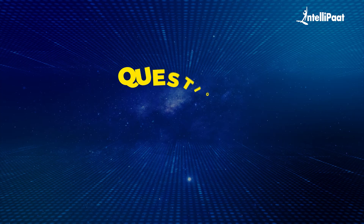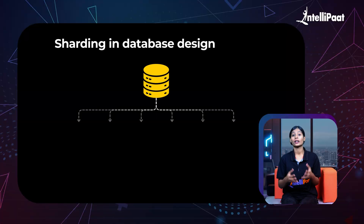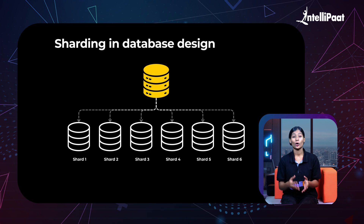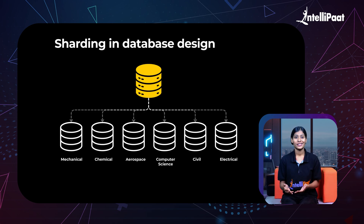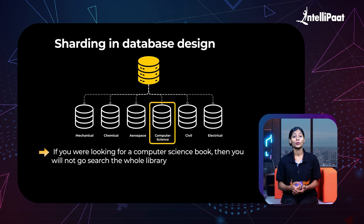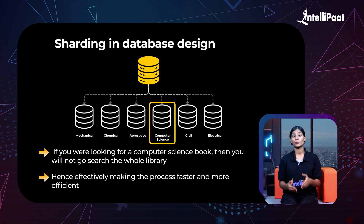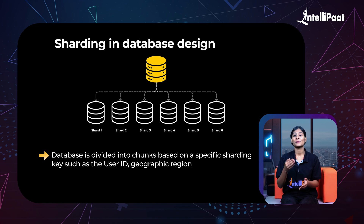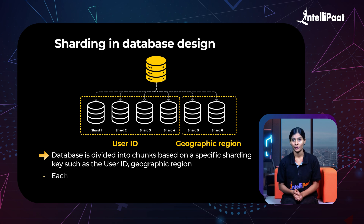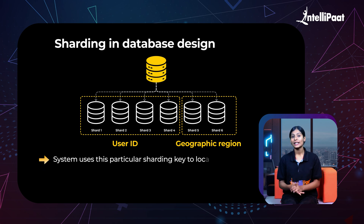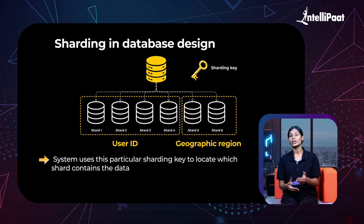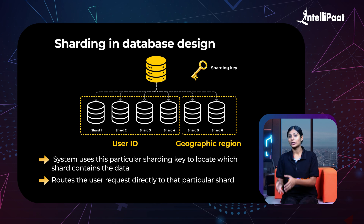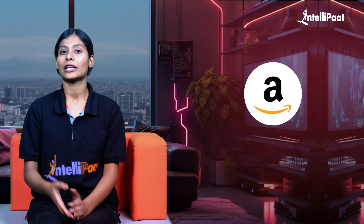Moving on to our last question of this module: what is sharding in database design? Sharding is a technique where a large database is split into smaller, more manageable parts called shards. Think of it like a huge library split into different sections based on the books it contains — if you're looking for a computer science book, you go straight to the computer science section, making the process faster and more efficient. The database is divided into chunks based on a specific sharding key, such as user ID or geographic location, and each chunk is stored on a different server. When a query is made, the system uses the sharding key to locate which shard contains the data and routes the request to that shard. Examples of sharding include popular social media platforms like Facebook and Instagram, e-commerce websites such as Amazon, and online multiplayer gaming platforms.